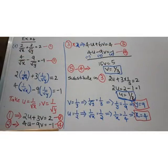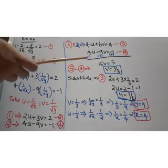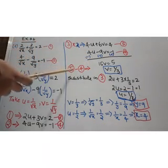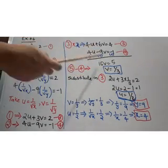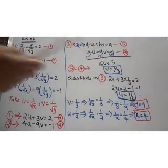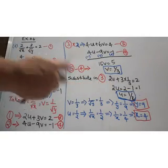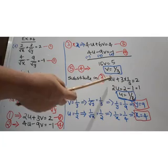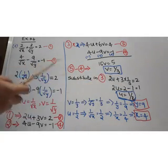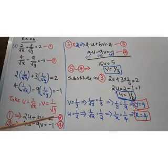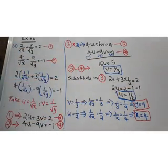Rewrite the fourth equation for convenience, then subtract: equation 5 minus equation 4. 4 minus 4 is 0, eliminating u. Then 15v equal to 5, so v equal to 1 by 3. Similarly, as in the previous question, substitute v into the third equation and we get u equal to 1 by 2.